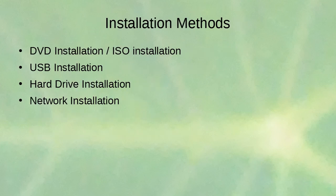There are a few installation methods. DVD installation is typical for physical devices. If you're using VirtualBox or VMware, an ISO installation lets you install from a DVD image before it's burned. The virtualization software pretends the DVD is present and installs from that image. You can also do USB installations, hard drive installations, or network installations — though network installations require a boot service.